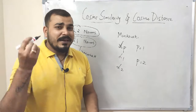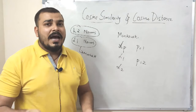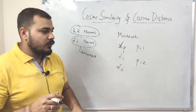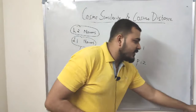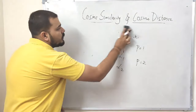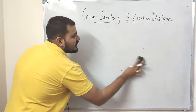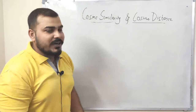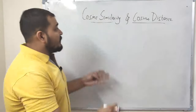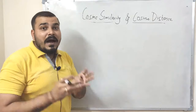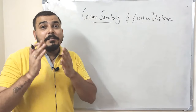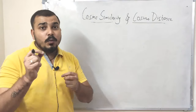If you haven't seen that previous video, please have a look — I've explained it clearly with practical applications, and it's already in my playlist. Now I'm going to continue the discussion with respect to cosine similarity and cosine distance, which is widely used in recommendation systems.